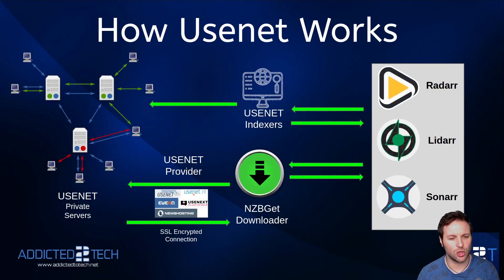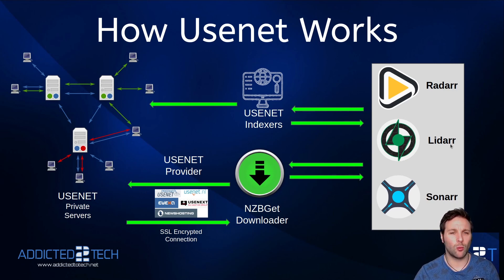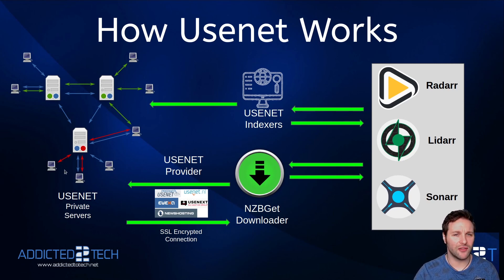Before we get to installing NZBGET I just wanted to lay the groundwork for the next couple of episodes and explain how usenet works. Today we're installing NZBGET which is a download application on our Raspberry Pi. Radarr is for movies, Lidarr is for music, and Sonarr is for TV series, and they all work with a web interface you can interact with across the network. Usenet uses private servers that require a paid subscription, and it uses a newsgroup where you can access and download files from the usenet servers.